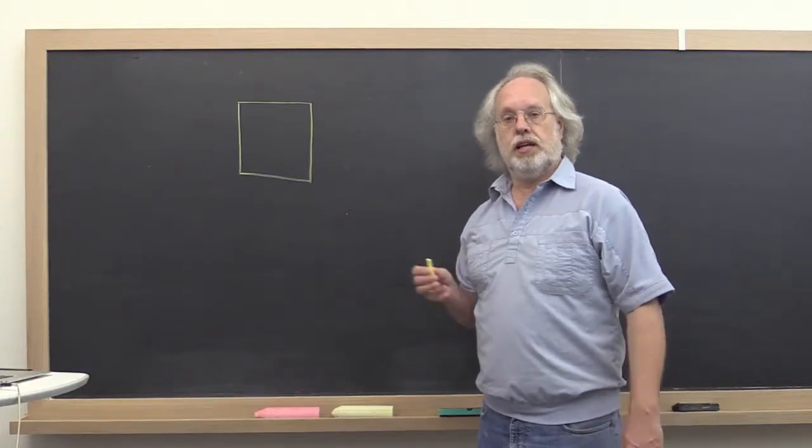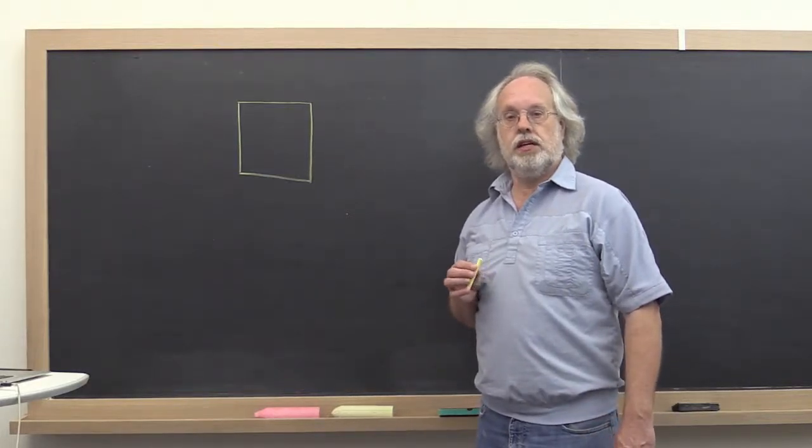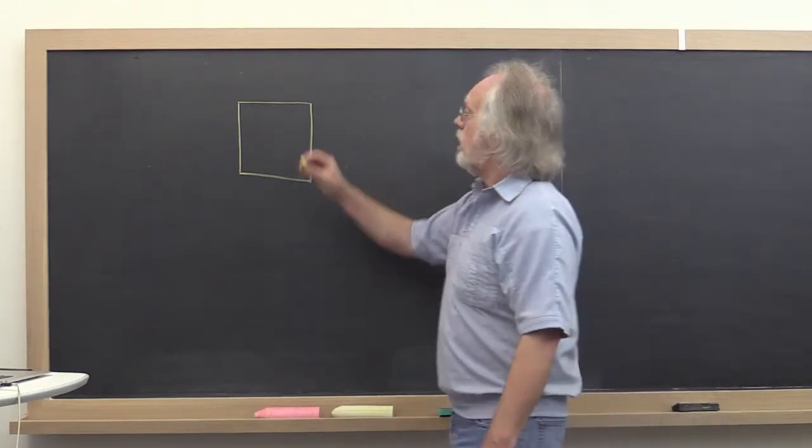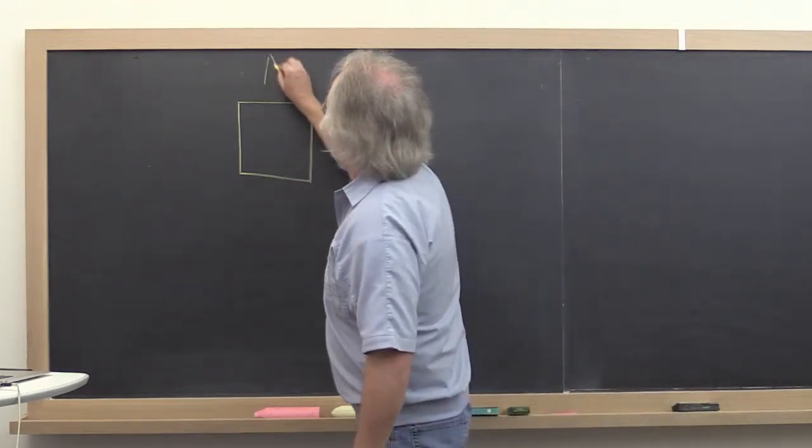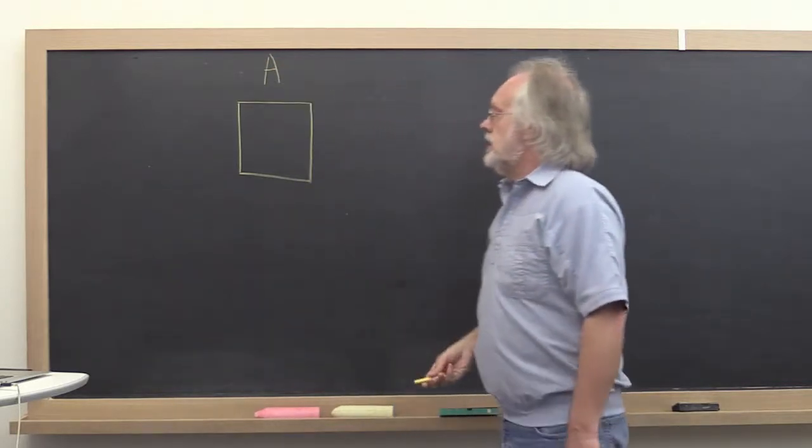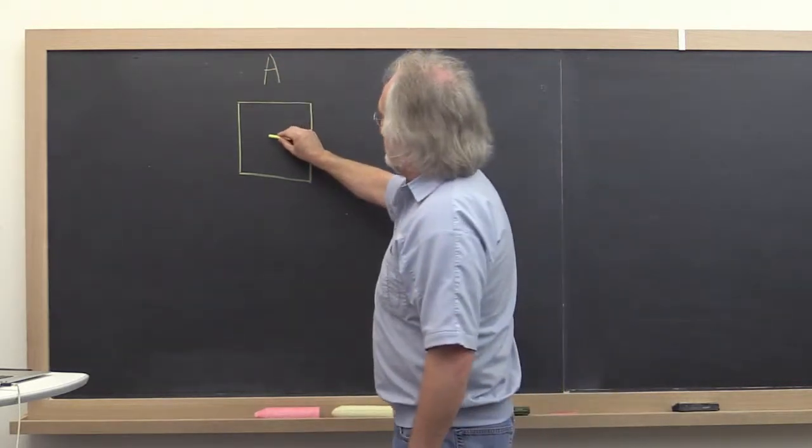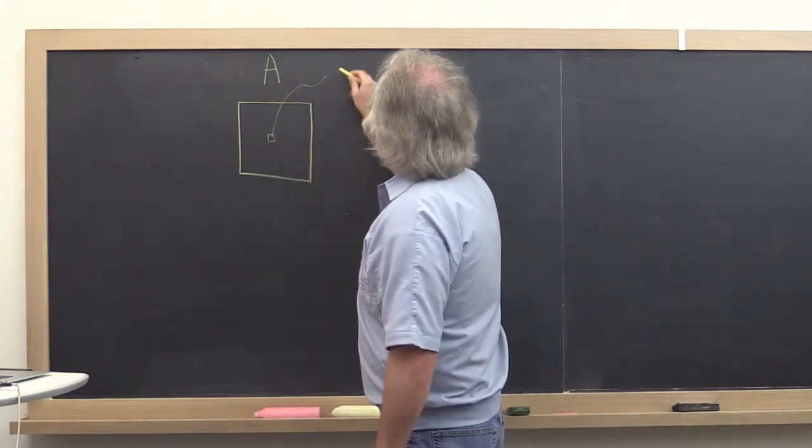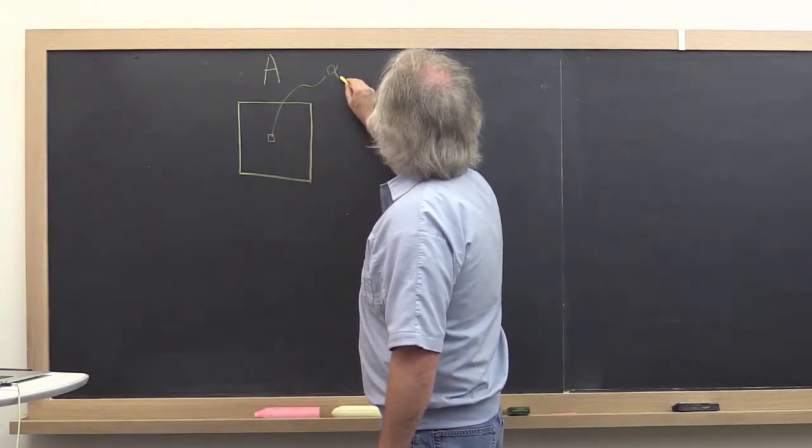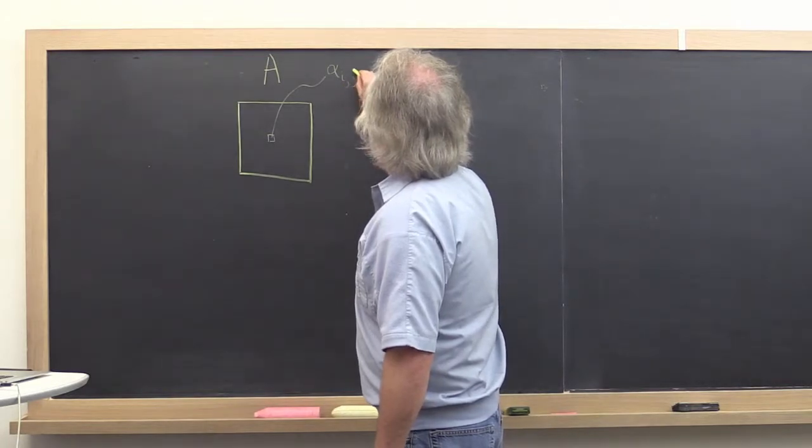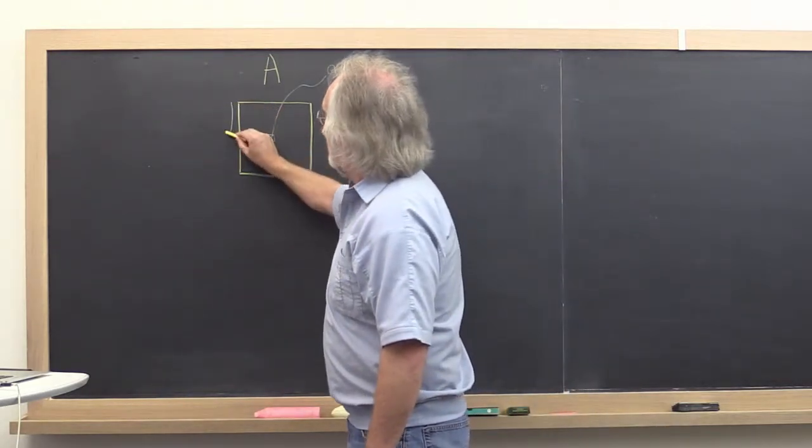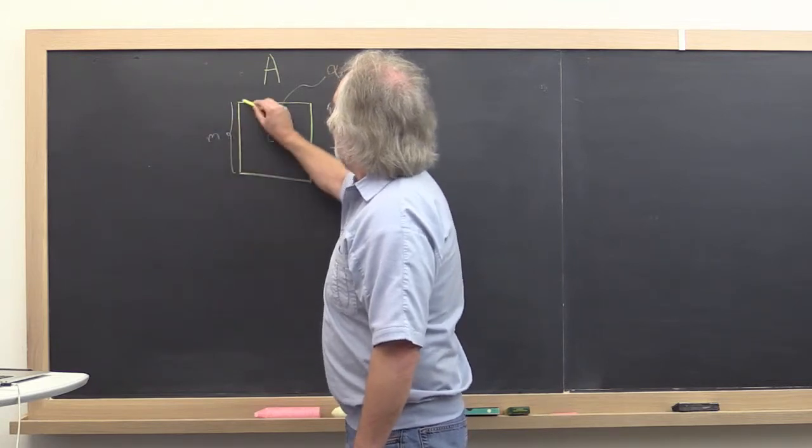We're now going to generalize how we index in memory when we access a matrix. Let this box represent matrix A, and a typical entry in that matrix is alpha i,j. Let's assume this matrix is M by n.